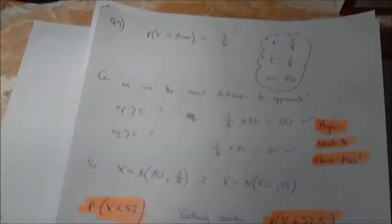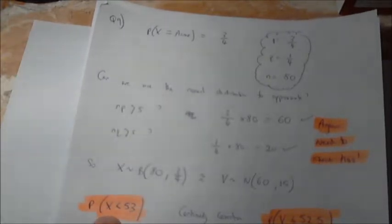Okay, next one. So the question asks us, we want it to be for X to be fewer than 53. So this is our next step. We now need to do the continuity correction. So X can't actually be 53. So the first value it can be is 52, or sorry, the last value it can be is 52.